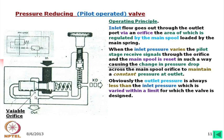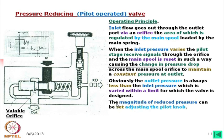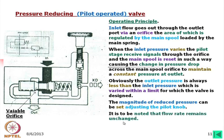If you want to control at a very small level, say 1 megapascal pressure, you probably have to go for a smaller valve. The magnitude of reduced pressure can be set by adjusting the pilot knob. It is to be noted that the flow rate remains unchanged within this range. If this is an excess flow system, that means this flow will always go through the pressure relief valve. XD is the optional external drain port.